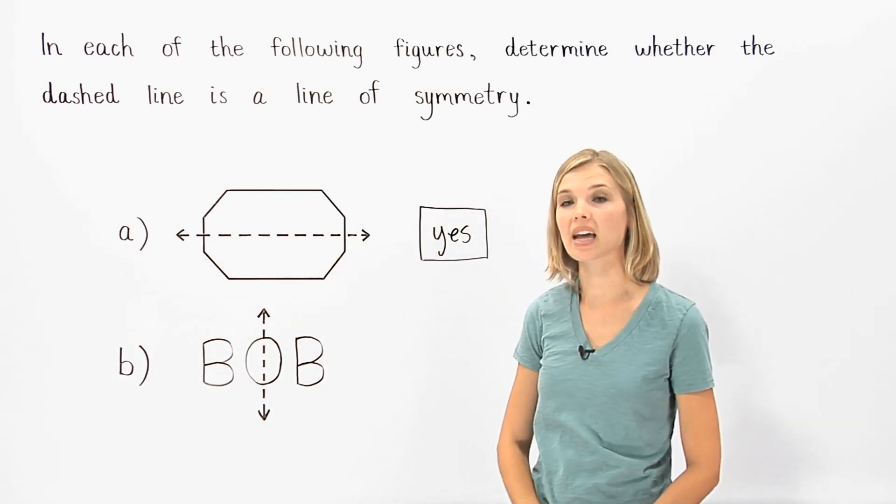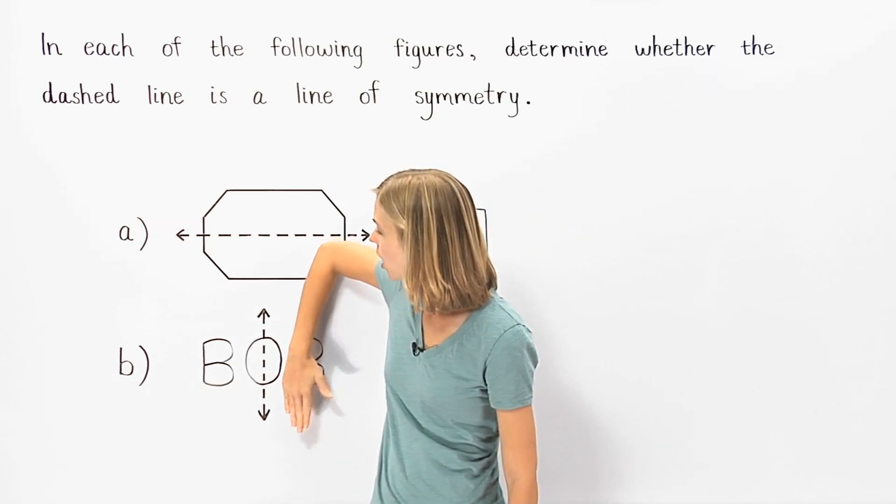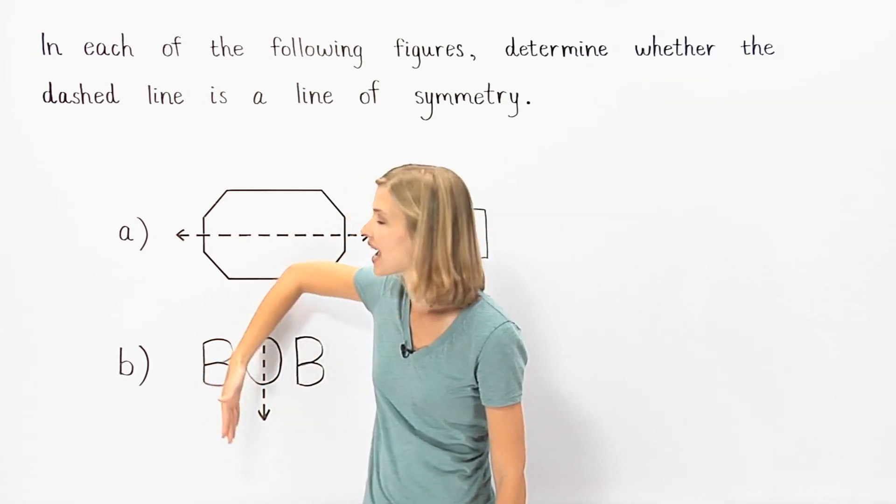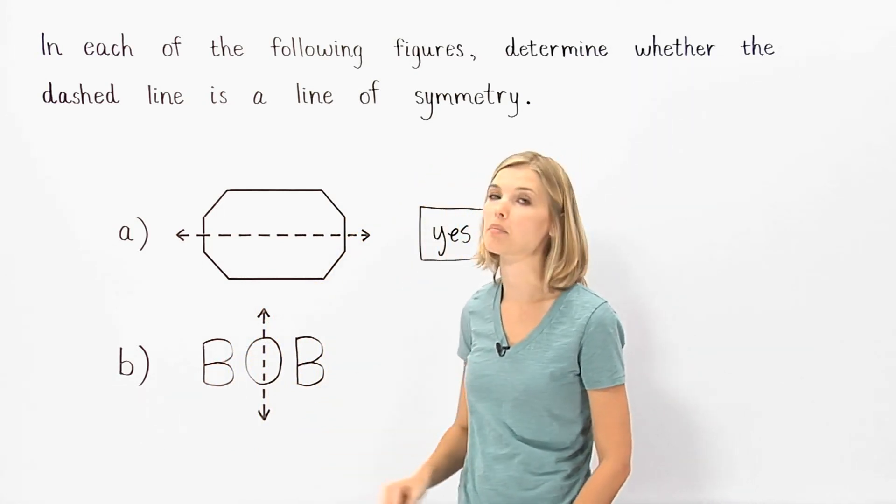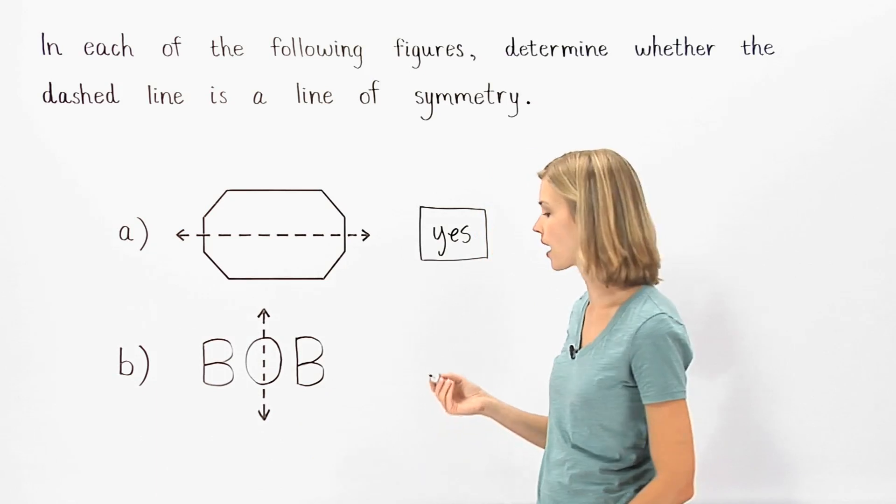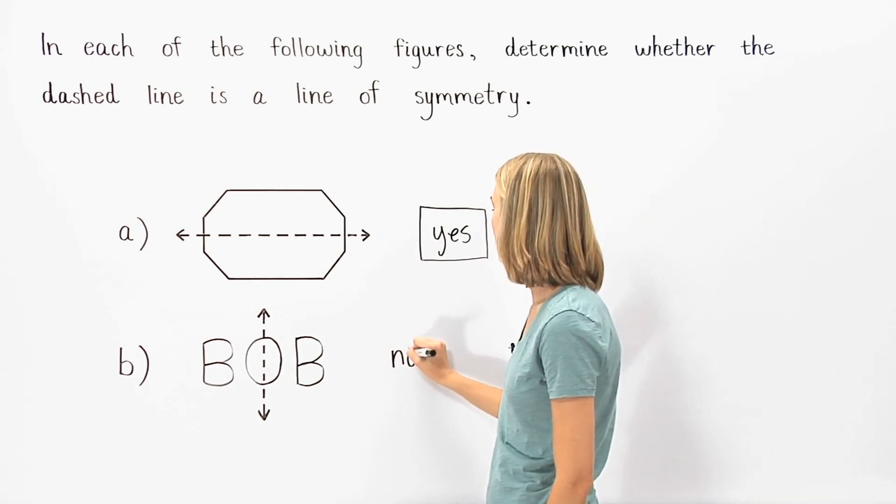In part B, notice that if we flip the right side of the figure over the line of symmetry, it does not match up exactly, because the second B would then be backwards. Therefore, our answer is no. The dashed line is not a line of symmetry.